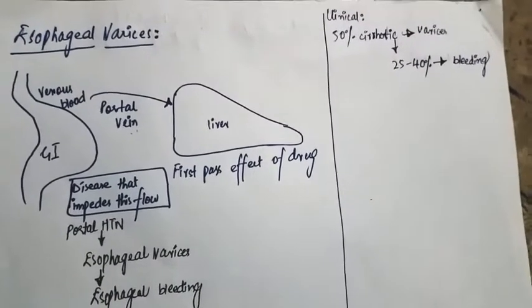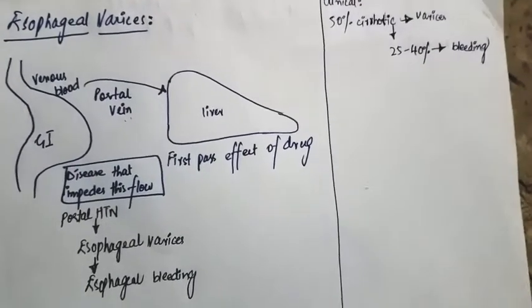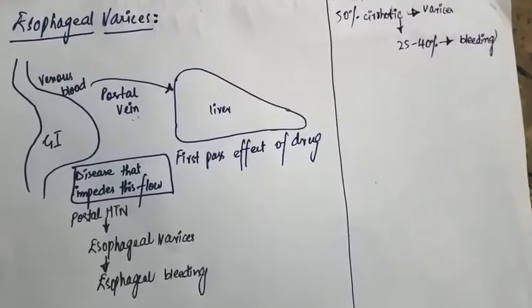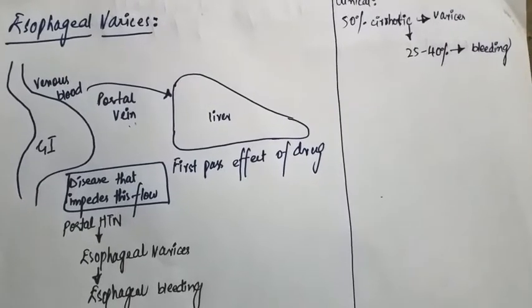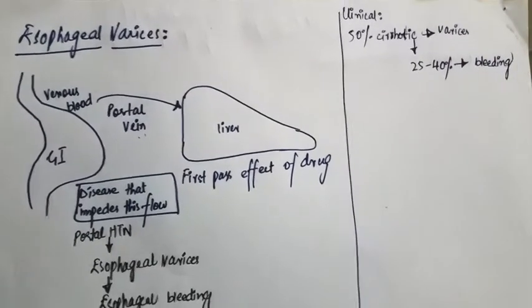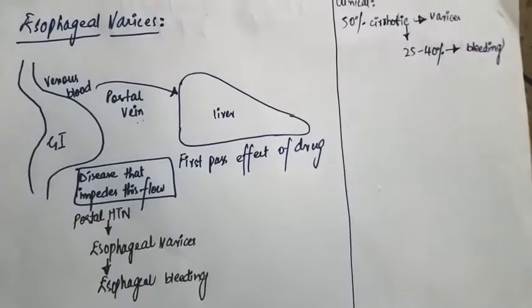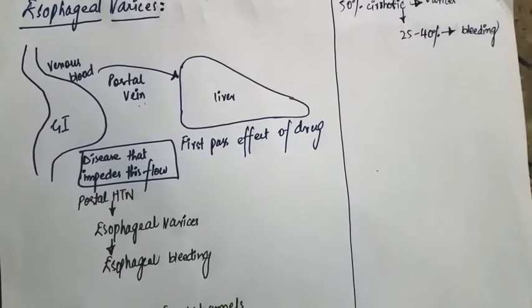Now come to esophageal varices. Basically the venous blood of the GI tract passes to the liver first by the portal vein, which is the main cause of the first pass effect of drugs or other compounds. Diseases that impede this flow will cause portal hypertension.